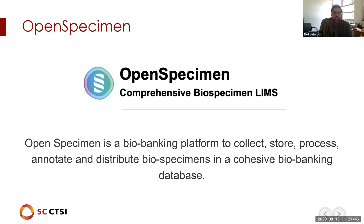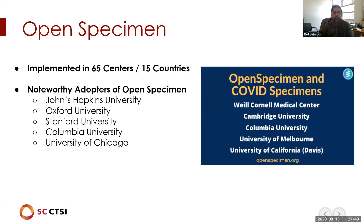When we did our review, we found we were in very good company with other academic medical centers. Hopkins, Oxford, Stanford, Columbia, University of Chicago, and others have also deployed OpenSpecimen. Some of these, including Cornell, Cambridge, Columbia, Melbourne, and Davis, have been using OpenSpecimen as part of their COVID initiatives for specimen collection.